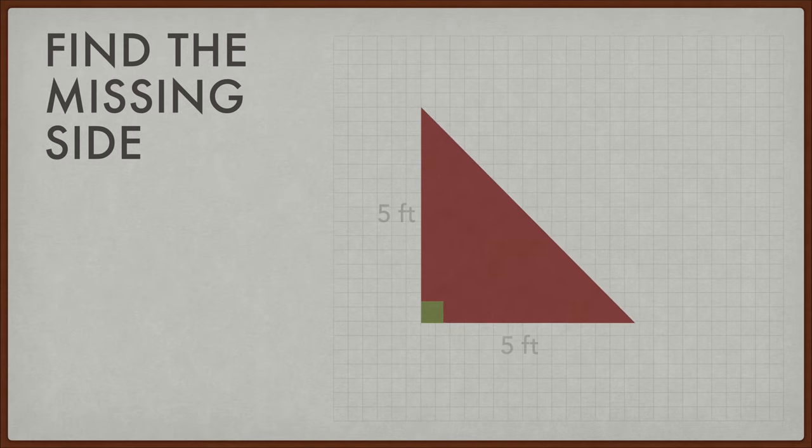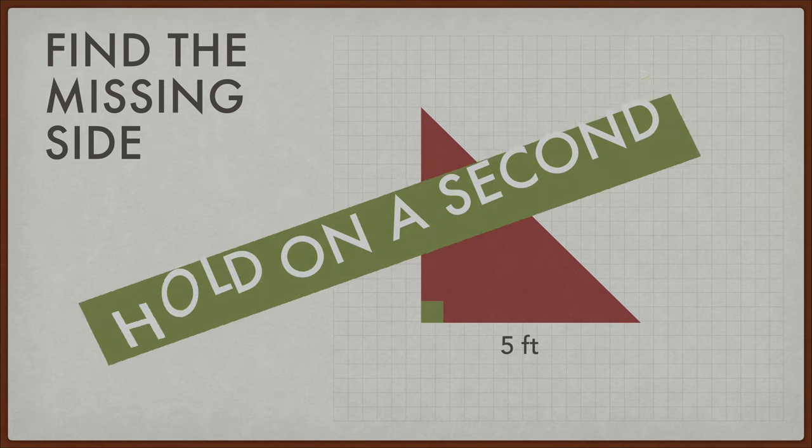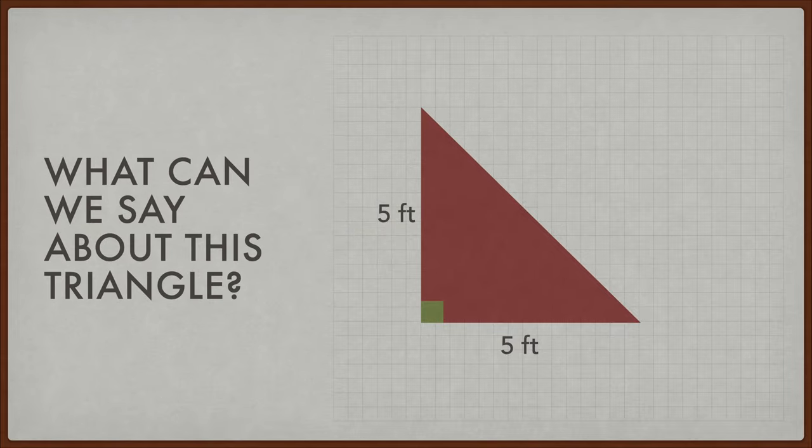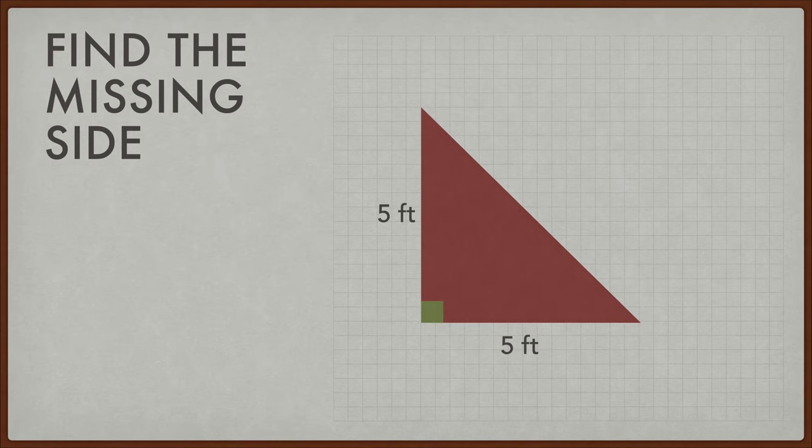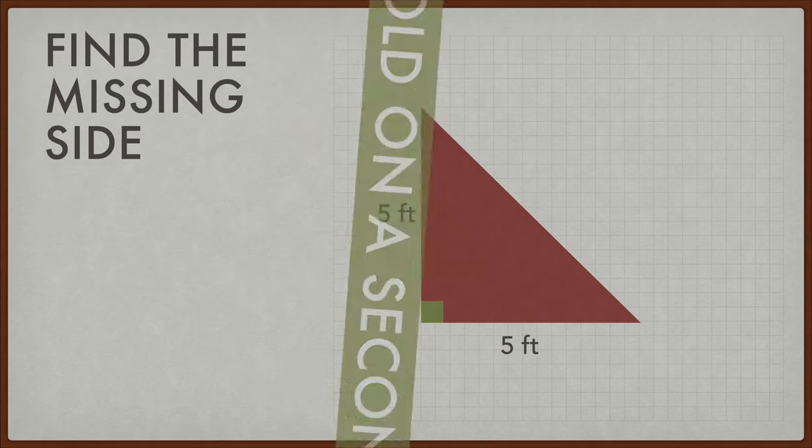So now let's try this one. So we have 5 and 5. Now, wait a minute. This is a special, what can we say about this triangle? Well, both of the sides are equal, which means we could also call this isosceles. Hold on a second.